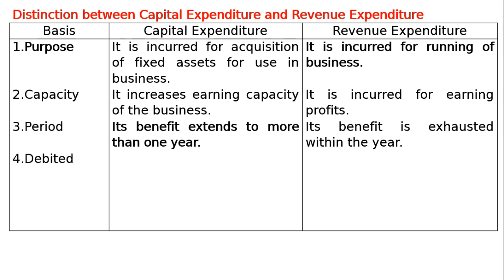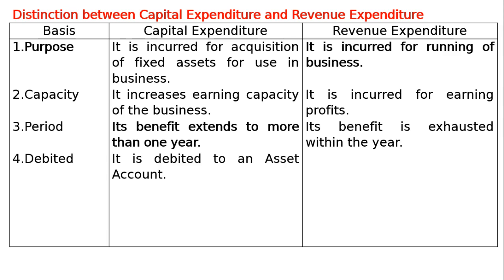The fourth basis is debited — to which account it is debited. In case of capital expenditure, it is debited to an asset account; for example, machinery account debited to bank account when buying machinery by issuing a check. Whereas, in case of revenue expenditure, it is debited to an expense account; for example, rent account debited to cash account when rent is paid through cash.